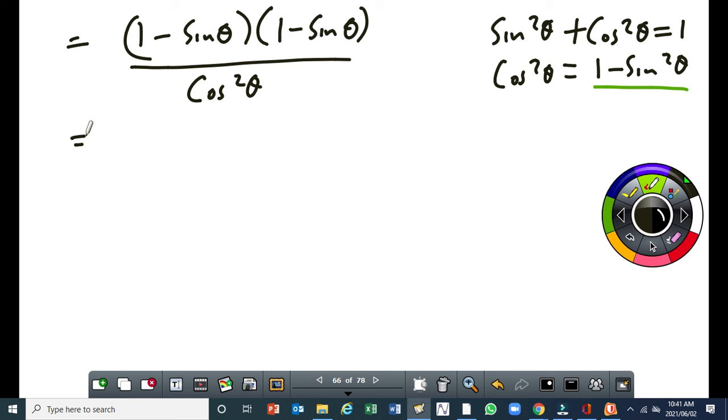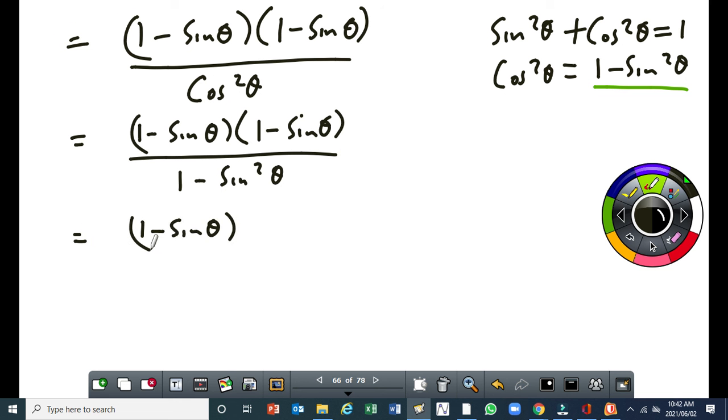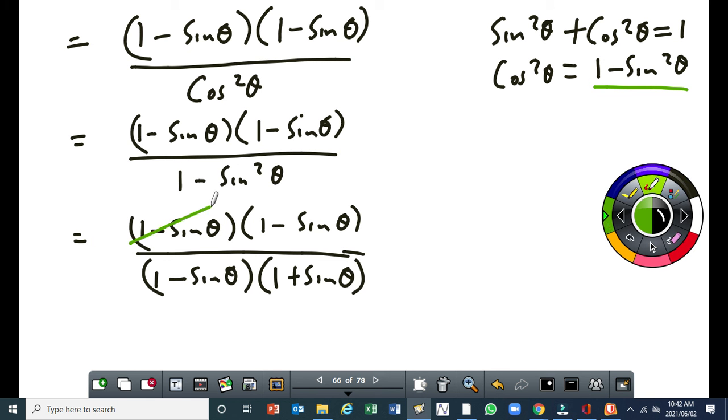So, I can write my next step as 1 minus sin θ times 1 minus sin θ all over 1 minus sin θ times 1 plus sin θ. Right then this 1 minus sin θ and that one there will cancel out